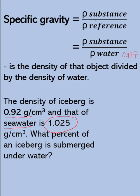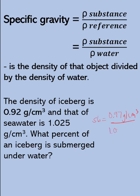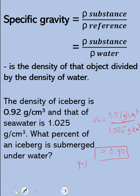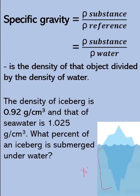For this problem, we can use specific gravity. Specific gravity equals the density of the iceberg — 0.92 grams per cubic centimeter — over the density of our reference, seawater, which is 1.025 grams per cubic centimeter. Solving this gives 0.90. This means the iceberg will float, and 90% of the iceberg will be submerged underwater while only 10% will be above the surface of the water.